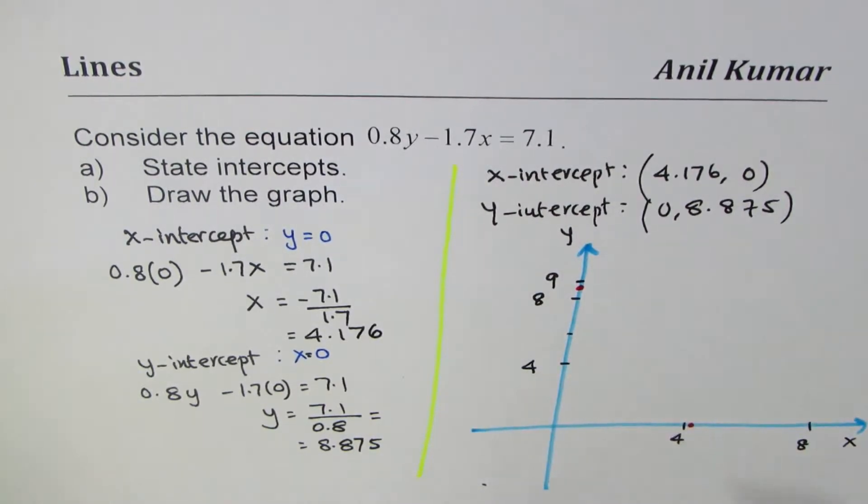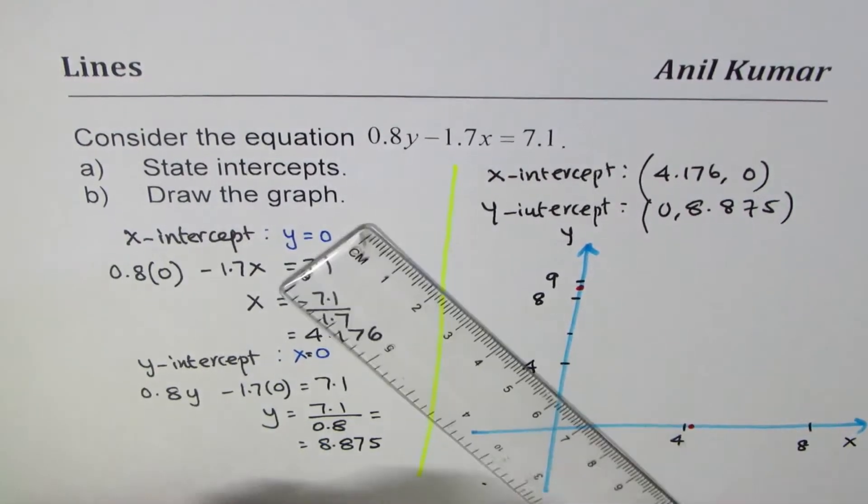Joining these points, we get a straight line. Let me take the scale. If I join these lines...